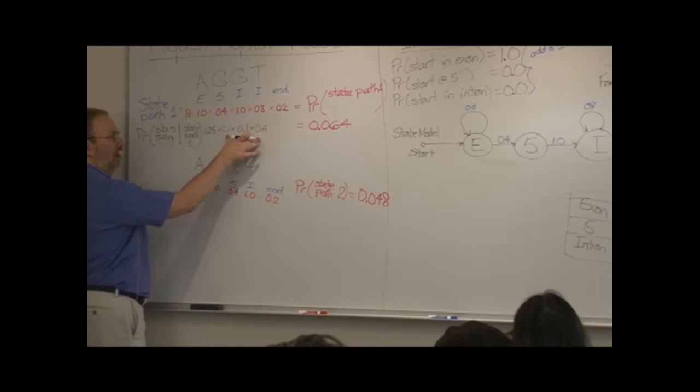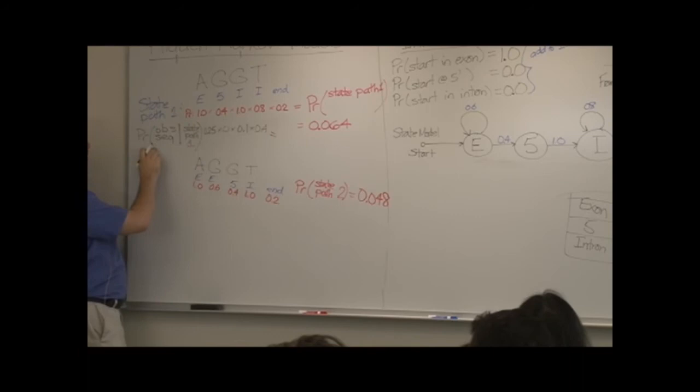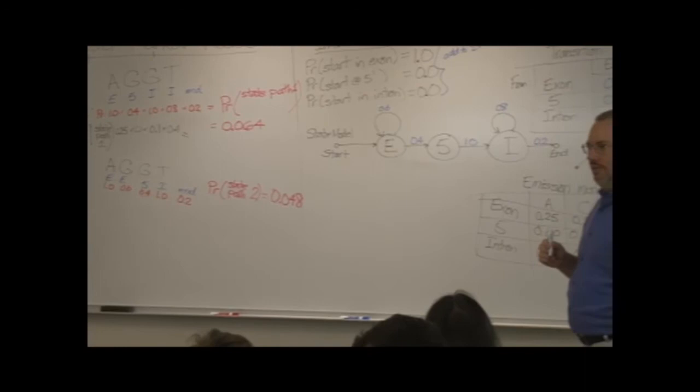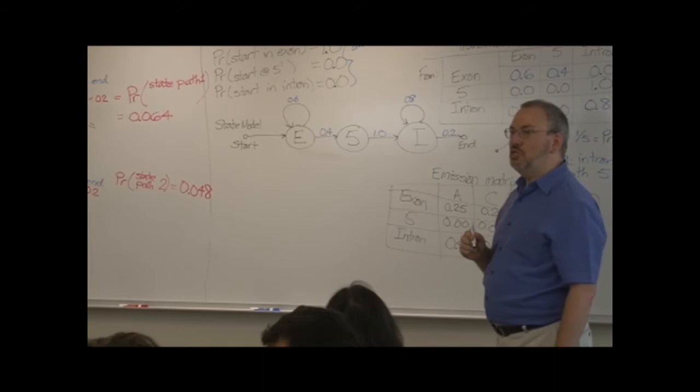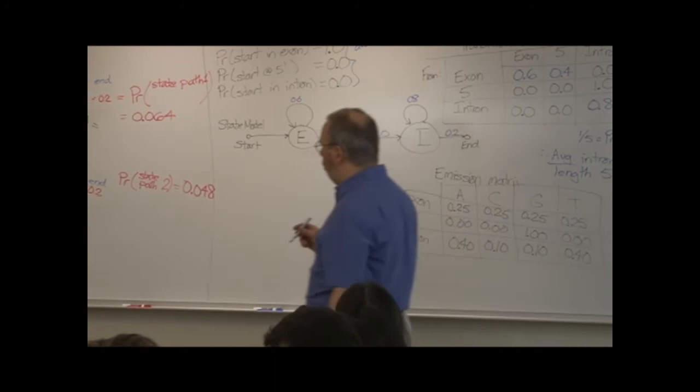So how do we combine all of these? Again, they're independent, so we can multiply them. So the total probability of the observed sequence, if we follow the first state path, is what? And this is why you were given the paper. 0, 0, 1.